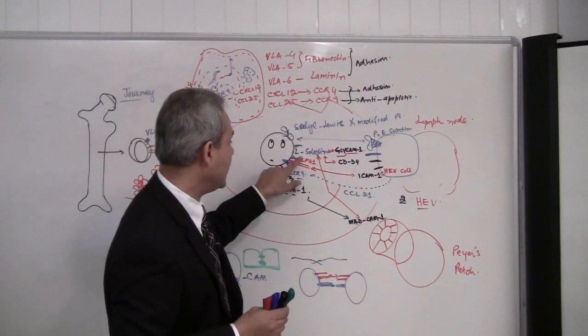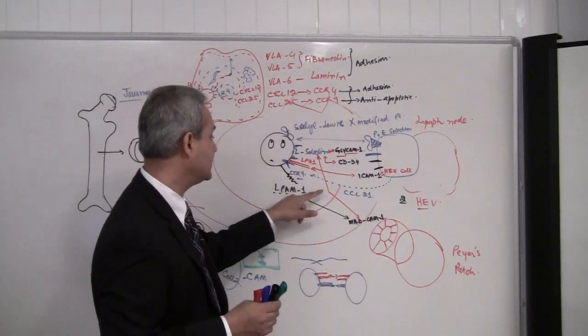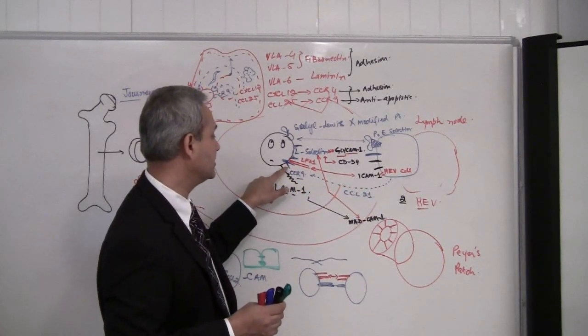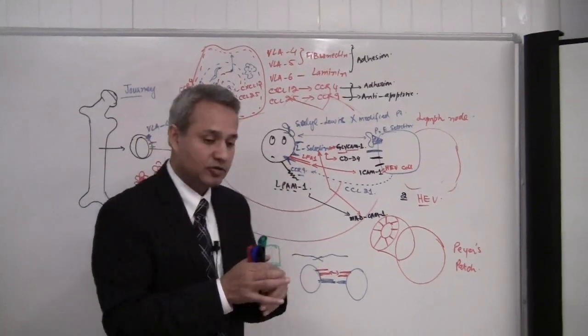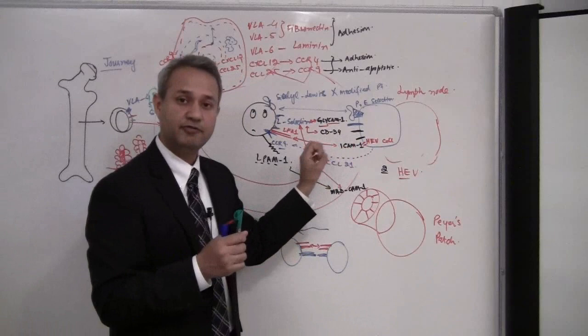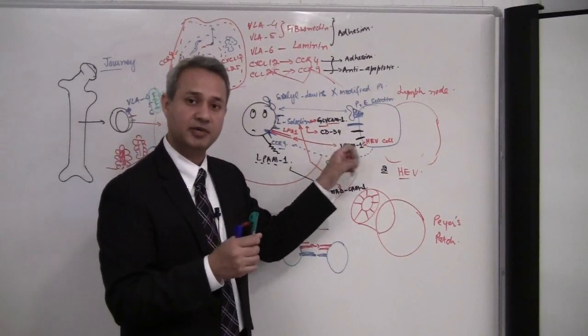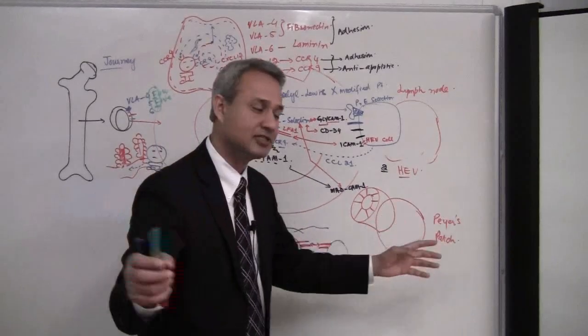Do not forget this. LFA1 will become activated after CCL21 connects with the CCR9 receptor. Once that is done, the high endothelial venular cells are secreting little messages: Hey, if you are a naive T cell, we are here, come here, like a car wash which happens in the summer days.